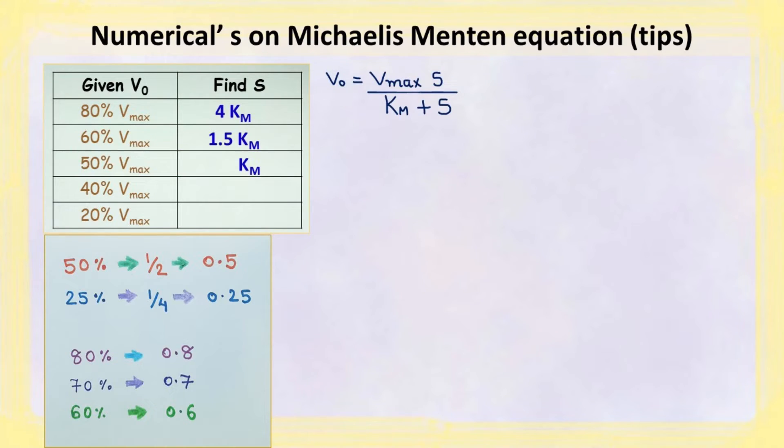The third case — 50 percent of vmax — is essentially the definition of km, which all of you are already familiar with.